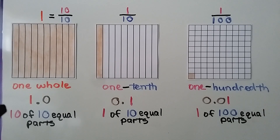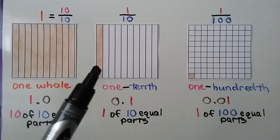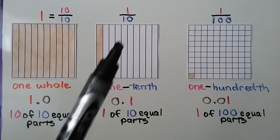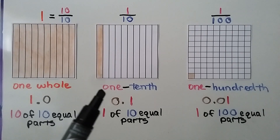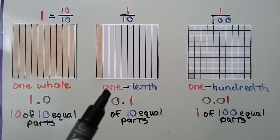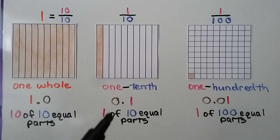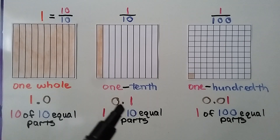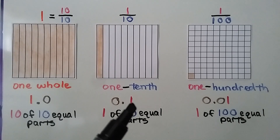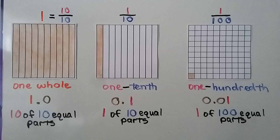It's ten of ten equal parts that are shaded. Here we have one of ten equal parts shaded — one-tenth shaded. It's written as one-tenth, and we can also write it as zero and one-tenth. We have a one in the tenths place value.